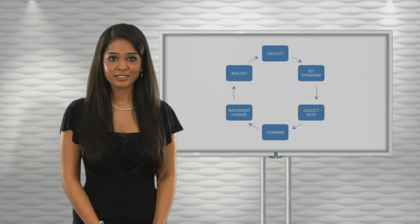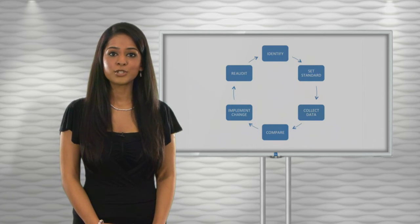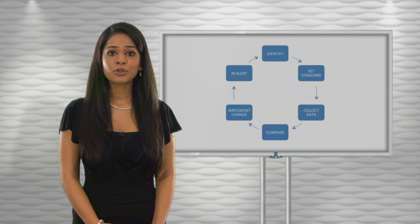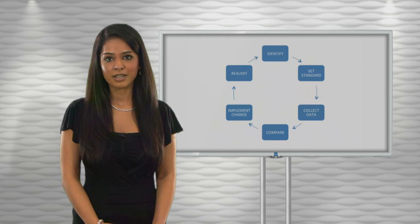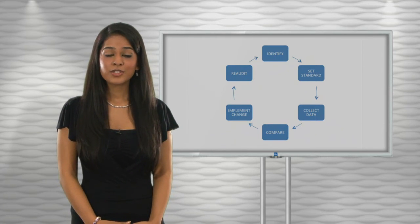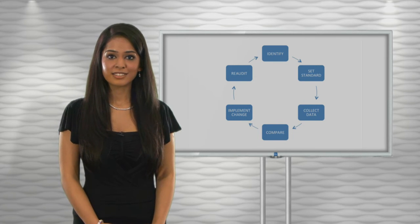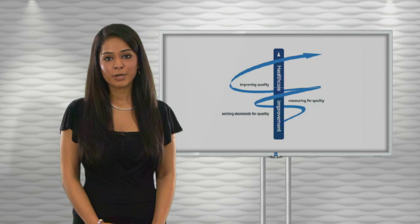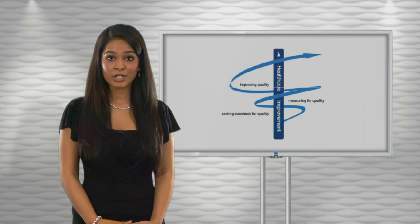So, what's the process? Well, the audit cycle involves coming up with a problem or objective, then a gold standard or agreed criteria to compare against needs to be identified. You're thereafter ready to collect the data and analyse it. This is followed by identification of areas for improvement before implementing the necessary changes and re-auditing.